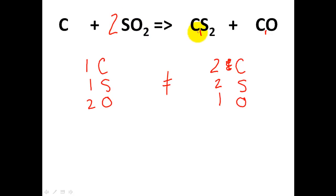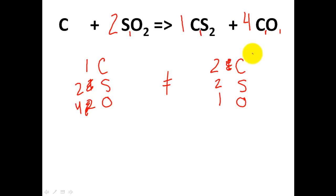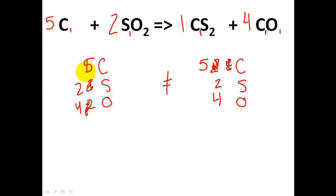I'll put a two in front of SO₂ to make two sulfurs, because one times two equals two, and two times two gives me four oxygens. Looking at the oxygens on the product side: two times two is four oxygens, so I need four oxygens there as well — four times one. Four times one is four oxygens, and four times one is four carbons plus this carbon right here, which makes five carbons. I need five carbons on the reactant side, so I put a five in front. Five atoms of carbon react with two molecules of sulfur dioxide to produce one molecule of carbon disulfide and four molecules of carbon monoxide.